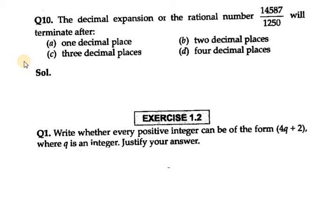Let's start with question number 10. It says the decimal expansion of the rational number 14587 over 1250 will terminate after one decimal place, two decimal, three decimal, or four decimal places.